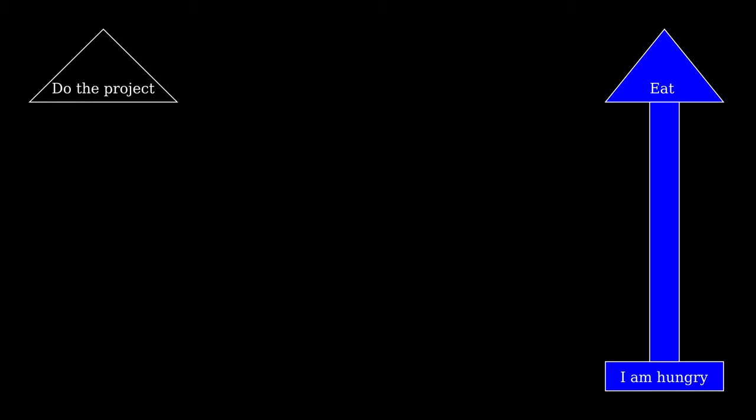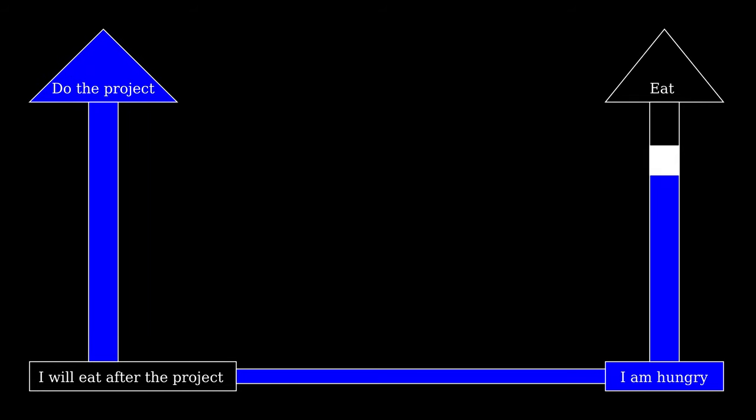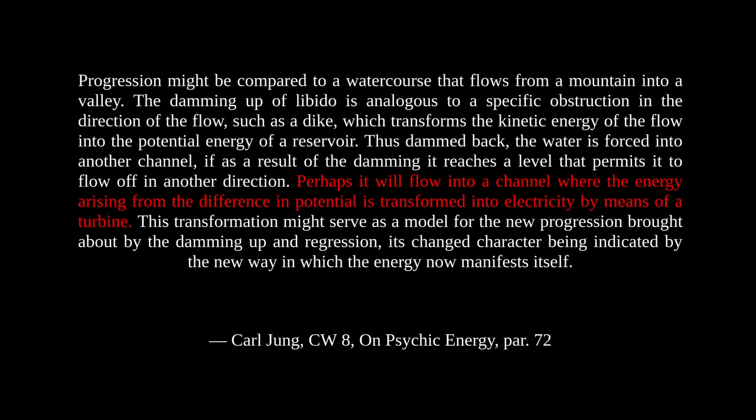Suppose you have a project you've been putting off that needs to be done. You're having trouble mustering the will to do it. And as you start it, you begin to get hungry. You can't easily turn the energy from hunger toward the project. There's no clear connection. And the project is keeping you from eating. What the ego can do is build what Jung called a canal. The ego can refuse to give in and give you some food. This is effectively creating a dam to block the energy of the hunger up. Then it can create a new piece of content to build a connection: I will eat after the project is done.